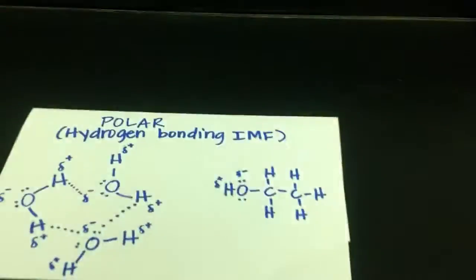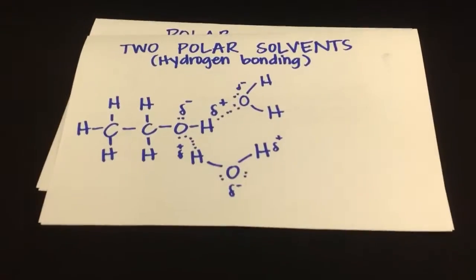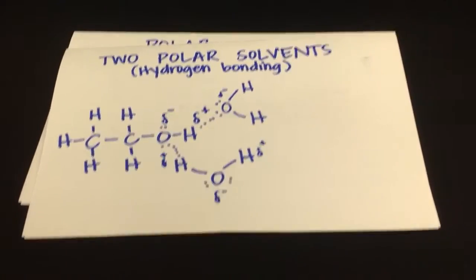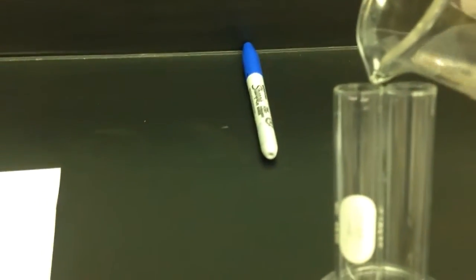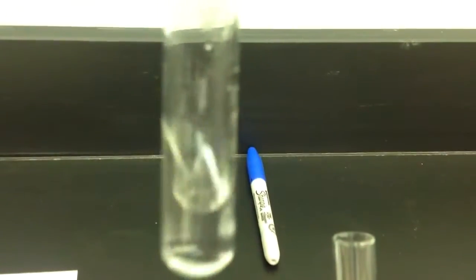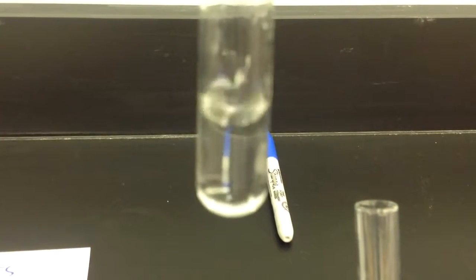However, when I add my polar solvent to another polar solvent — say I add ethanol to water — then we do not see the formation of layers. So when I do ethanol in water, there's my water that I'm pouring in. Ethanol is already in the test tube. There are no layers that form. They are completely miscible in each other.